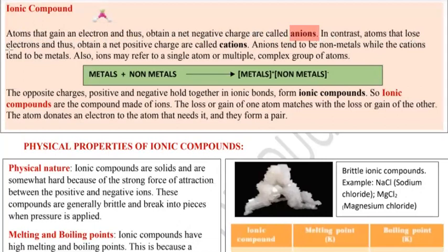In contrast, atoms that lose electrons and thus obtain a net positive charge are called cations. Such atoms which lose electrons obtain a positive charge. When the number of electrons is not equal to the protons, the total charge becomes positive. So, these atoms are called cations.